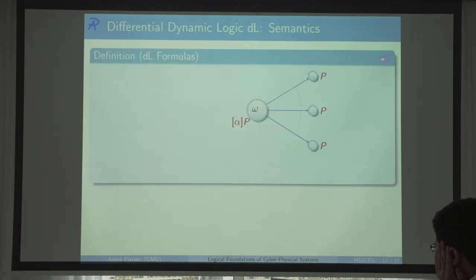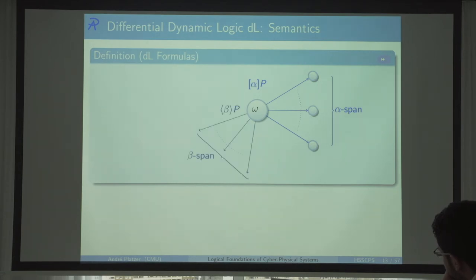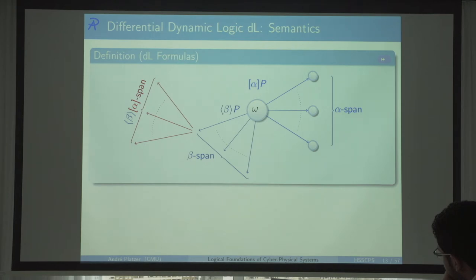Alpha box P is true in a state if the postcondition P is true in all states reachable by running alpha. Alpha diamond P is true if there is one alpha-successor such that P holds. This is the alpha-span — everything reachable by running alpha. We can also mix in propositional connectives or quantifiers, giving a very expressive logic with a compositional semantics, which enables compositional proofs.